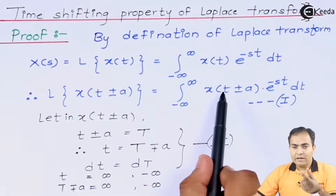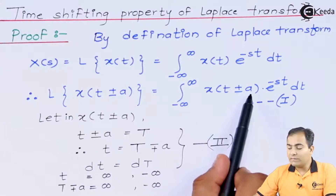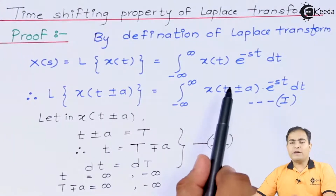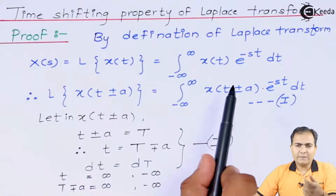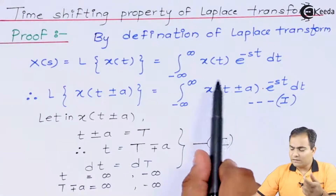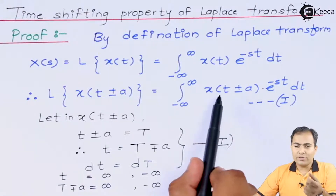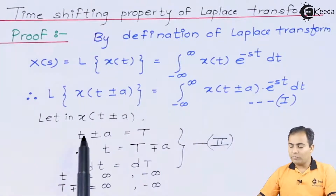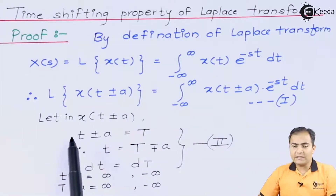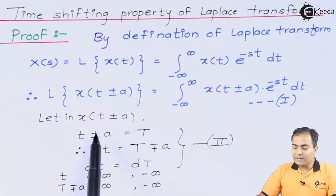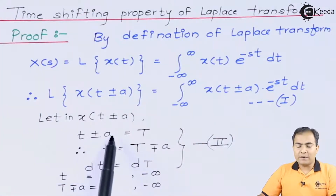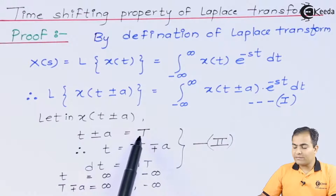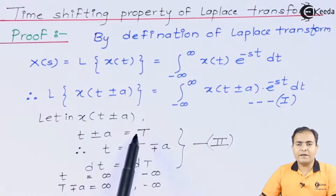Right now we have a variable with some integer value, so we need to substitute some values so that we get a single variable inside the bracket. My substitution is: let t ± a equal capital T. I have substituted capital T as the dummy variable.